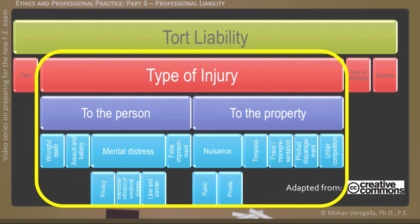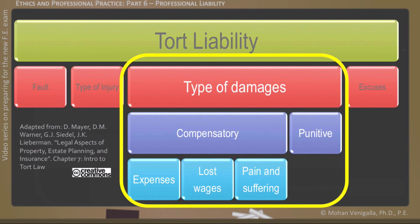The two main categories of type of injuries are injury to person and injury to property, each with subcategories. We will skip extensive coverage of this topic as it is a very large subject on its own. Depending on the category of tort and type of injury, damages can be either compensatory or punitive. Usually, compensatory damages are awarded for strict liability and negligence, whereas punitive damages almost certainly follow an intentional tort.